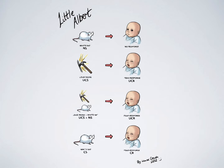A well-known experiment that demonstrates the conditioning of phobias is the Little Albert experiment, which was conducted by Watson and Rayner. In this experiment a nine-month-old infant known as Albert was conditioned to fear rats. Albert was continuously presented with a rat and at the same time a hammer would be struck against a steel bar to create a loud noise. Albert was scared of the sound and would cry when he heard this loud noise. After conditioning, Albert would cry when he saw the rat because he learned an association between the noise and the rat.